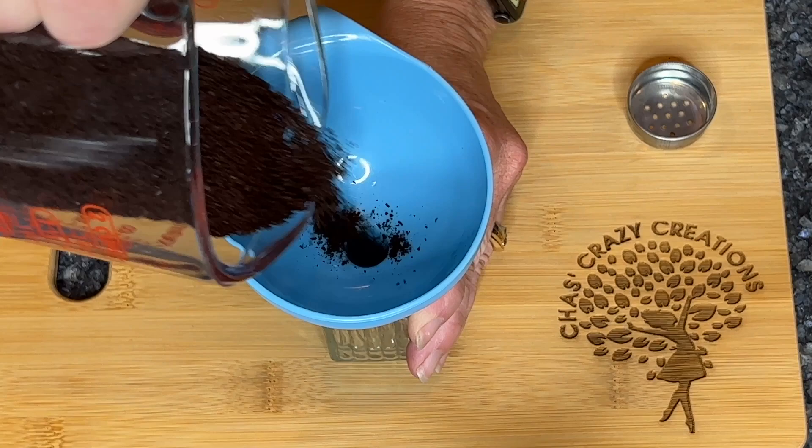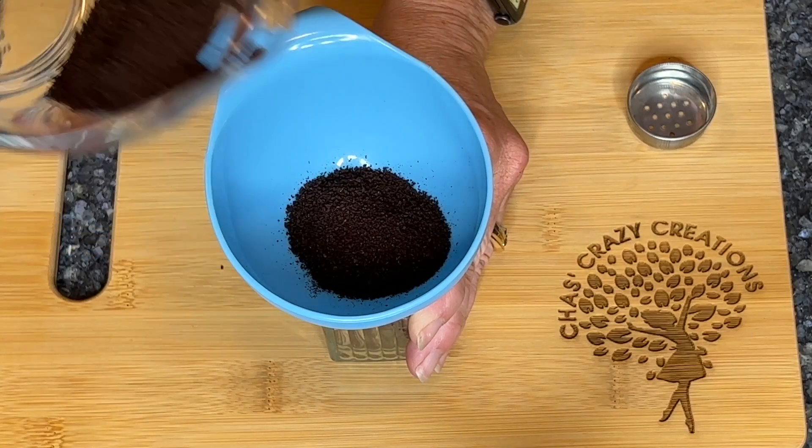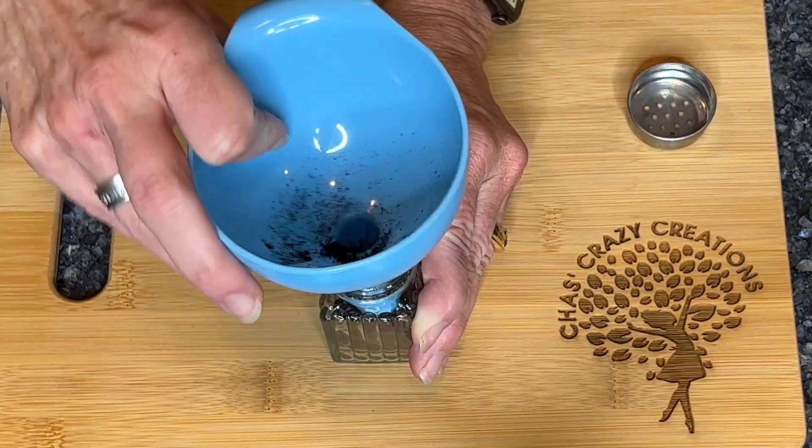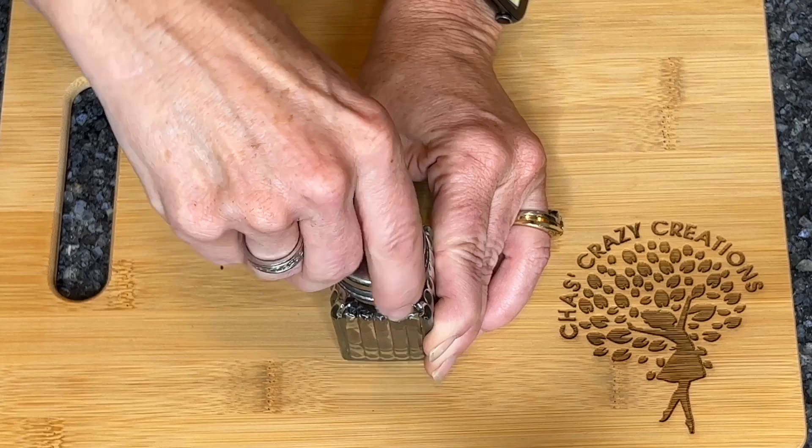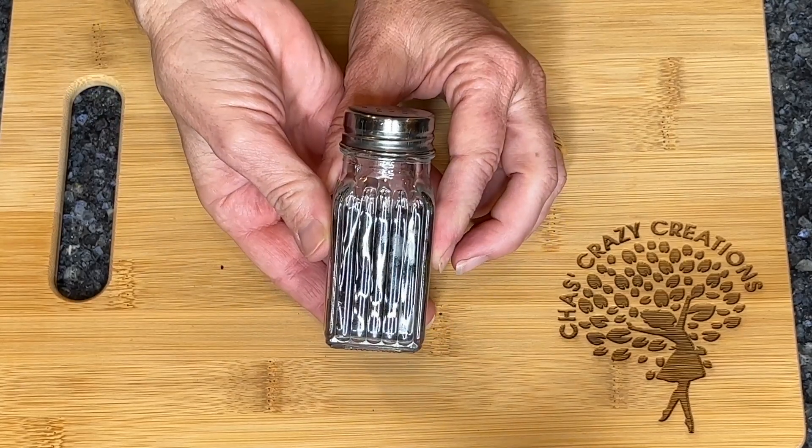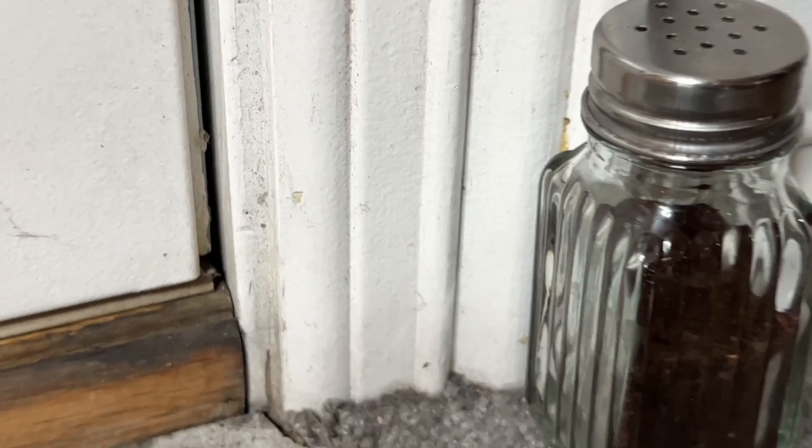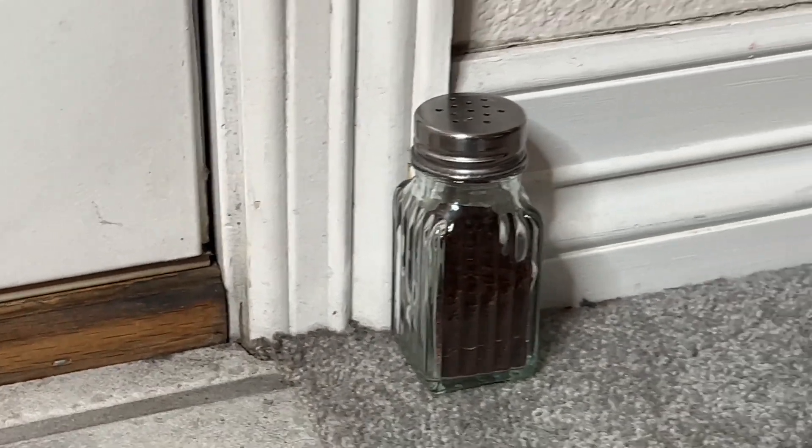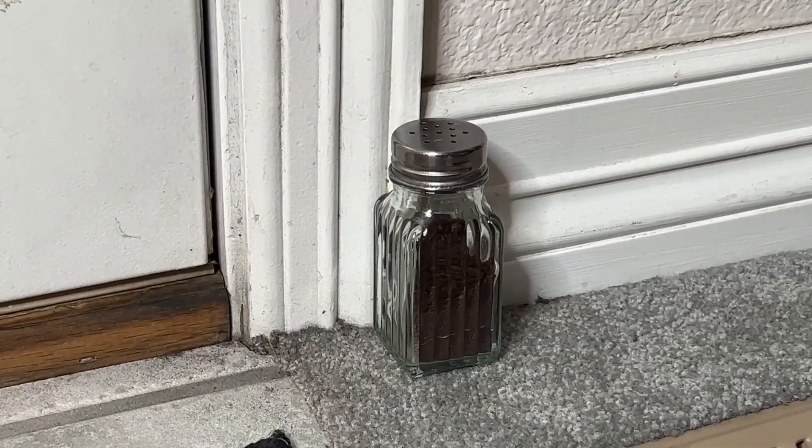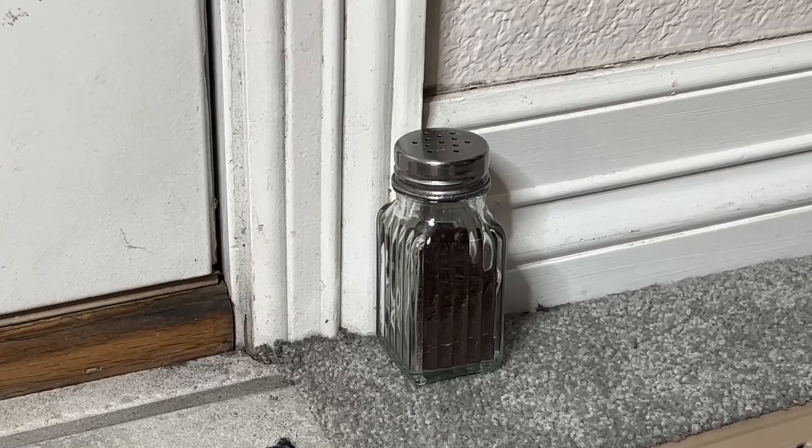Dry out some of your leftover coffee grounds and then put the grounds into the salt shaker and then put the lid back on top. Place the salt shaker near any place where bugs, ants, rodents get into your home. The smell will repel them from coming in. You can also sprinkle this outside on the perimeter of your house to keep them from coming in in general.